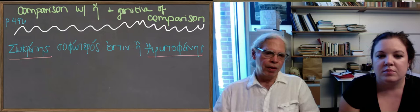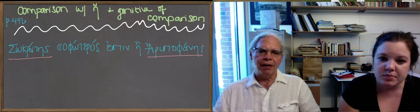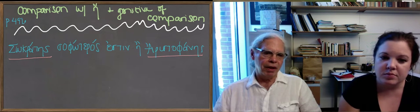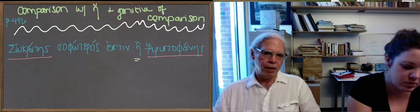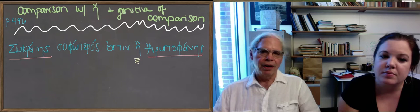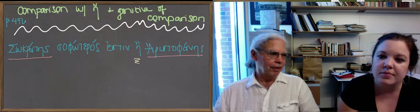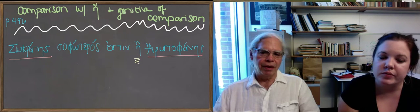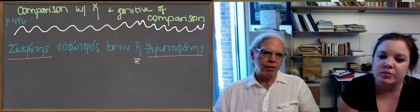Socrates is wiser. And then we have this new word for than, e. It's an eta with a smooth breathing and an acute accent, which has become grave, because it's at the end of the word. It's going to always be grave, except if there's an enclitic after it. Socrates is wiser, and that word means than, e.